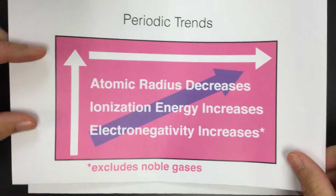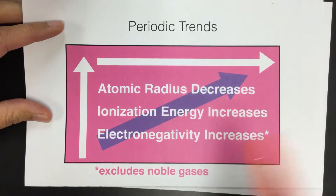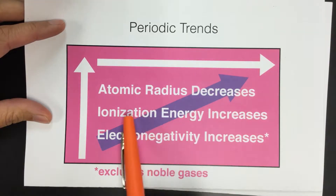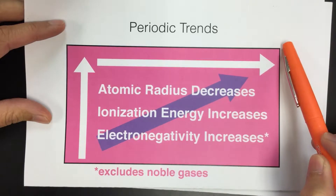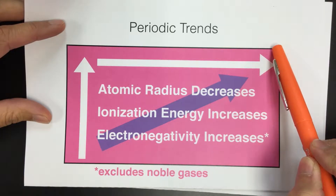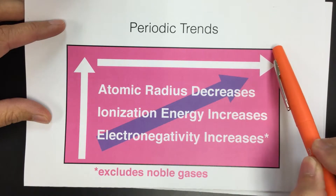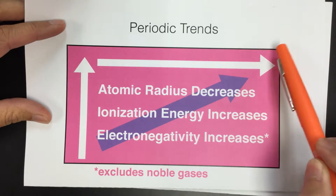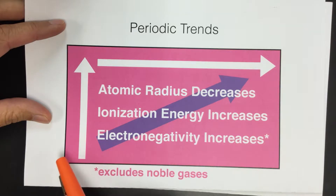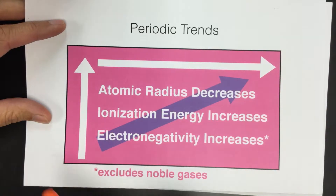That is why atomic radius is the most important trend — it's related to all the others. As atomic radius decreases and the atom is very small, its ionization energy is going to be very large. Helium is the smallest element, so it has the highest ionization energy because it holds its electrons so close to its nucleus. On the other end, francium is the largest element, so it will be really easy to remove its outermost electron since it's so far from the nucleus. We can use francium and helium to compare ionization energies.